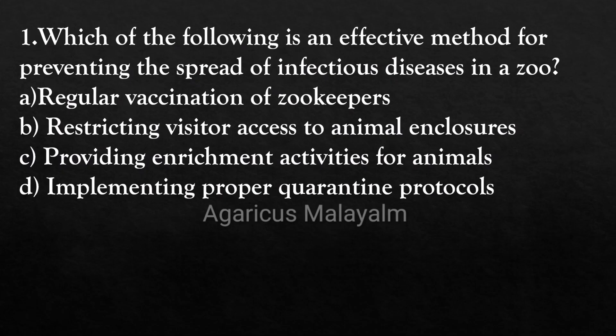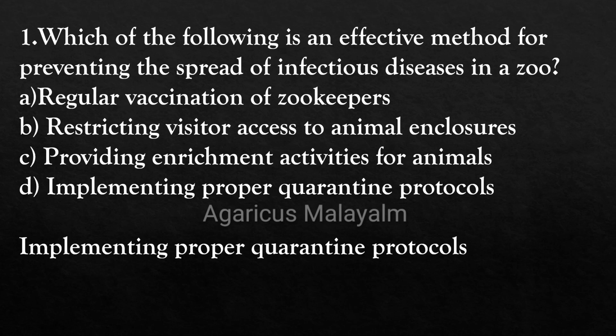First question: Which of the following is an effective method for preventing the spread of infectious disease in a zoo? Option A: regular vaccination for zookeepers. Option B: restricting visitors' access to animal enclosures. Option C: providing enrichment activities for animals. Option D: implementing proper quarantine protocols. Correct answer: Option D, implementing proper quarantine protocols.